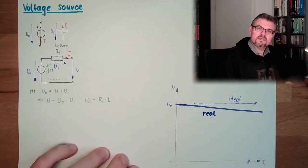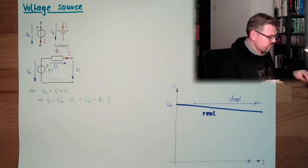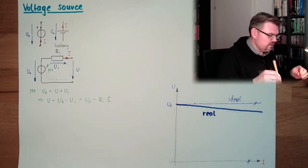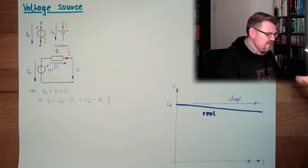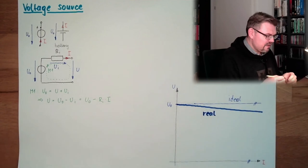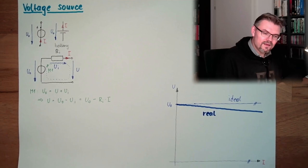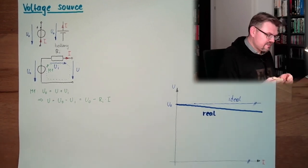The voltage depends on the current. The higher the current, the lower the voltage. Reason is this internal resistance. And then maybe some ask, then I don't build in this resistor. It's not built in. It's there.